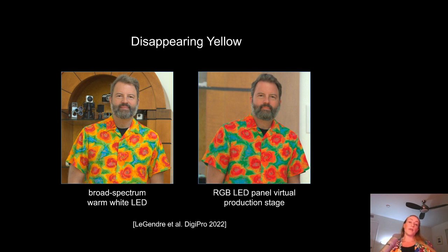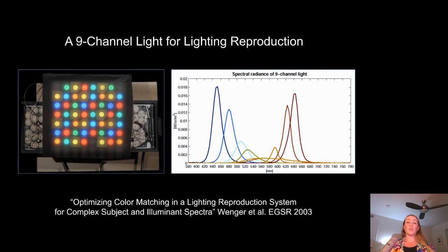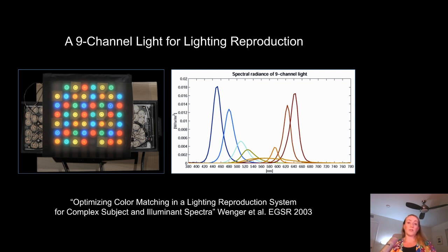Wenger et al. in 2003 thought about adding LEDs to fill in these spectral gaps for an individual light source. Fortunately, other LEDs besides RGB are available. Wenger et al. built a nine-channel light source out of Color Kinetics lights to compare with RGB LED lighting for lighting reproduction. Notably, to achieve yellow-colored sources, they had to place yellowish gel filters over white LEDs. Although lots of different LEDs of distinct spectra are available, making yellow LED lights emitting light around the 550 nanometer region was difficult then and is still difficult today.